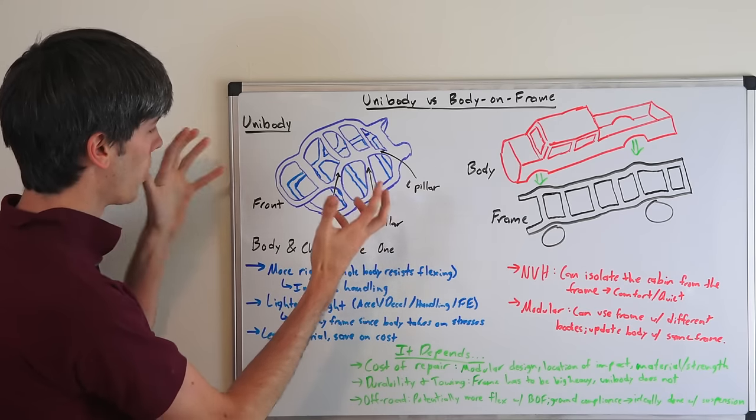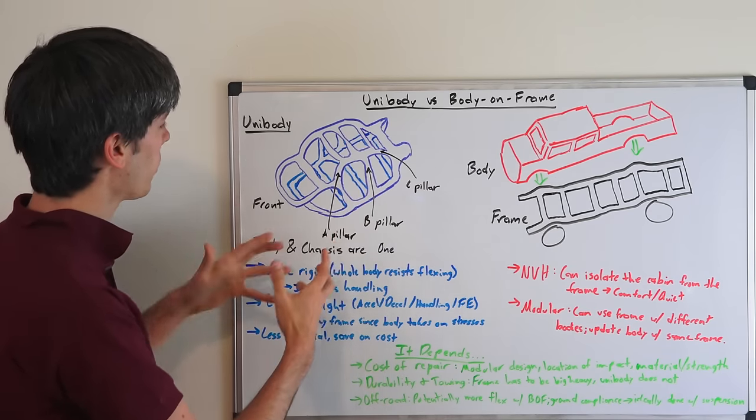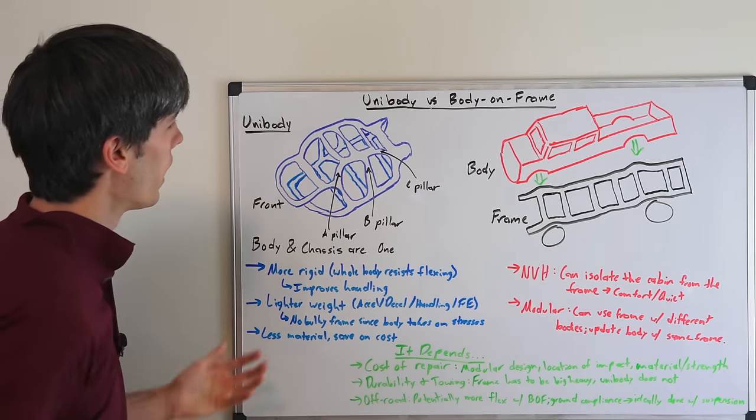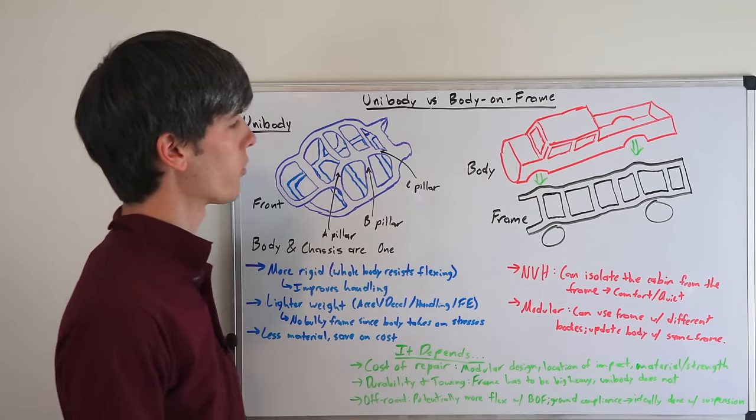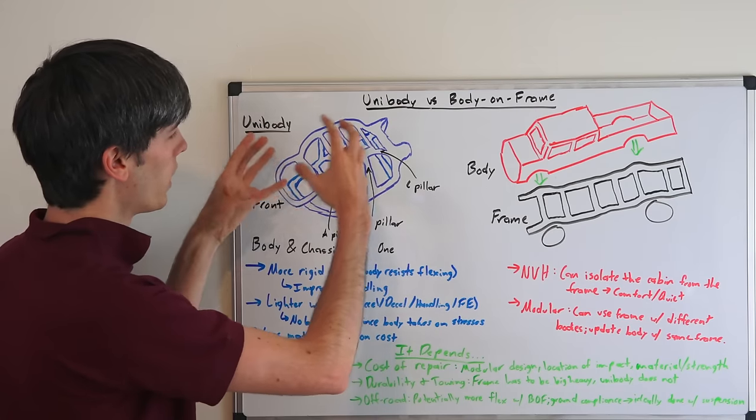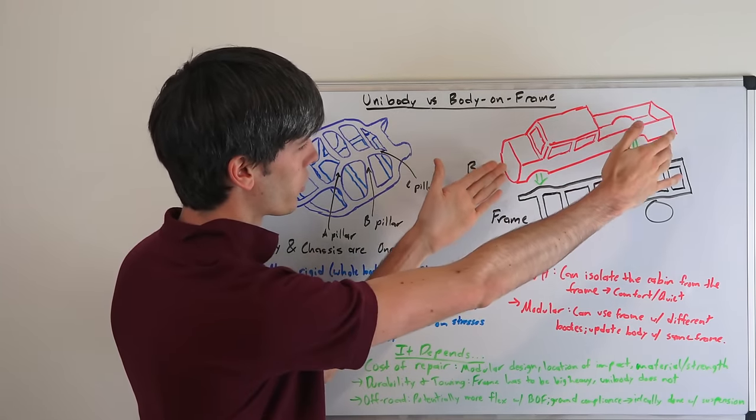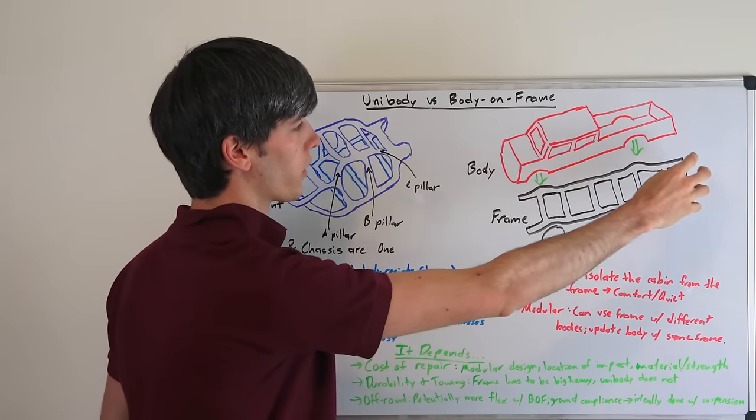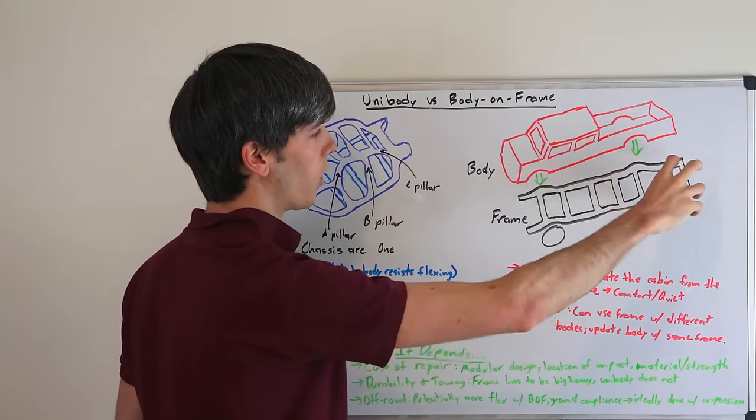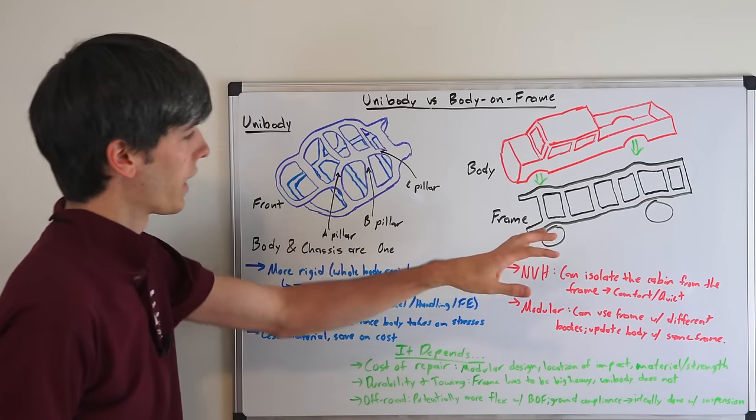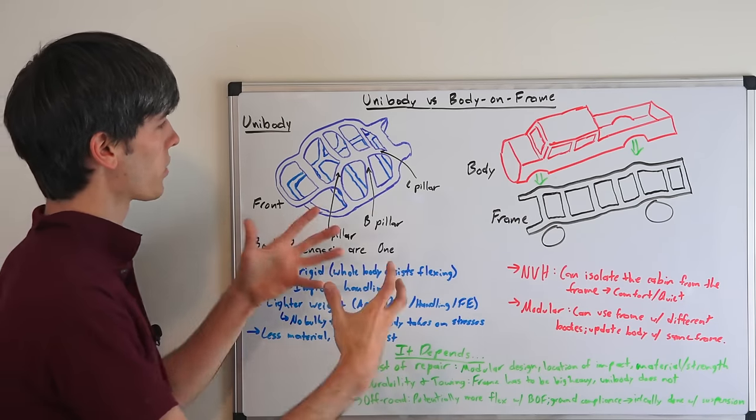So all of the stresses will pass through basically the entire vehicle here. Whereas we have a body on frame where you lower this truck body down on this frame. The stresses placed on the truck are all passing through the frame. And so that's the key difference between them, is kind of how the stresses are distributed.